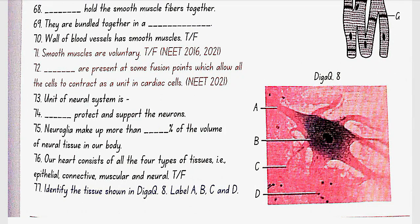Unit of neural system is neurons. Neuroglia protect and support the neurons. Our heart consists of four types of tissues: epithelial, connective, muscular, and neural. Yes, this is true. Neuroglia make up more than 50% of the volume of neural tissue in our body.